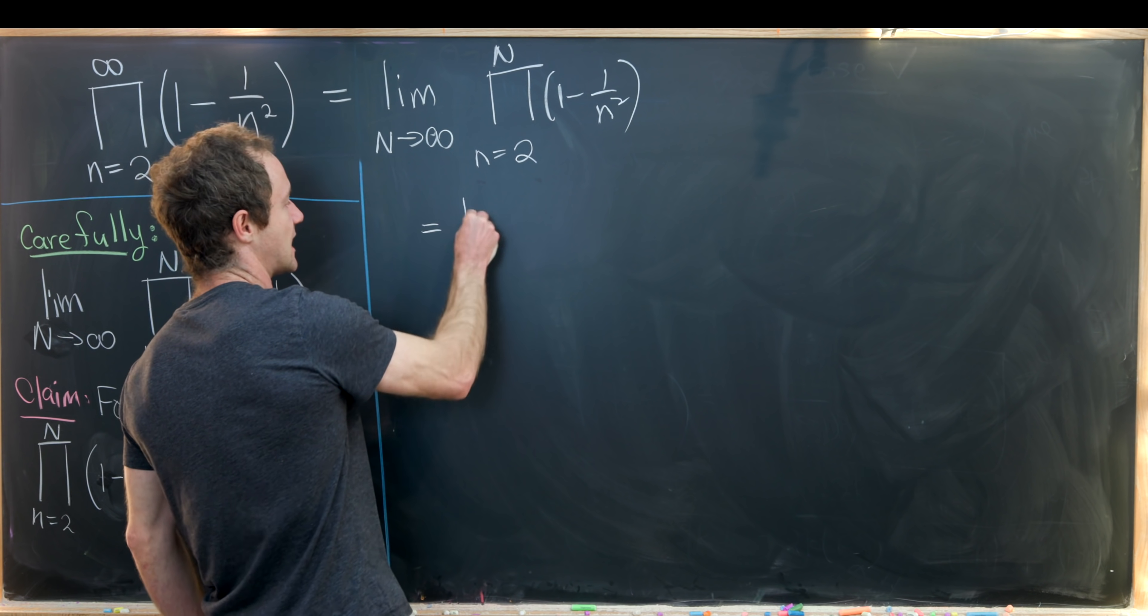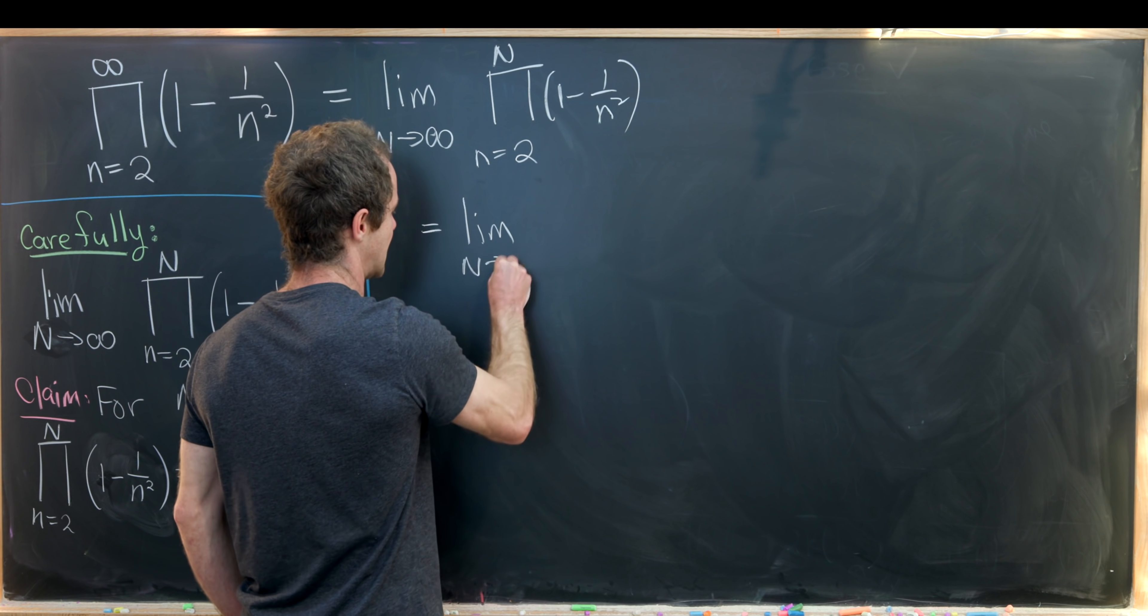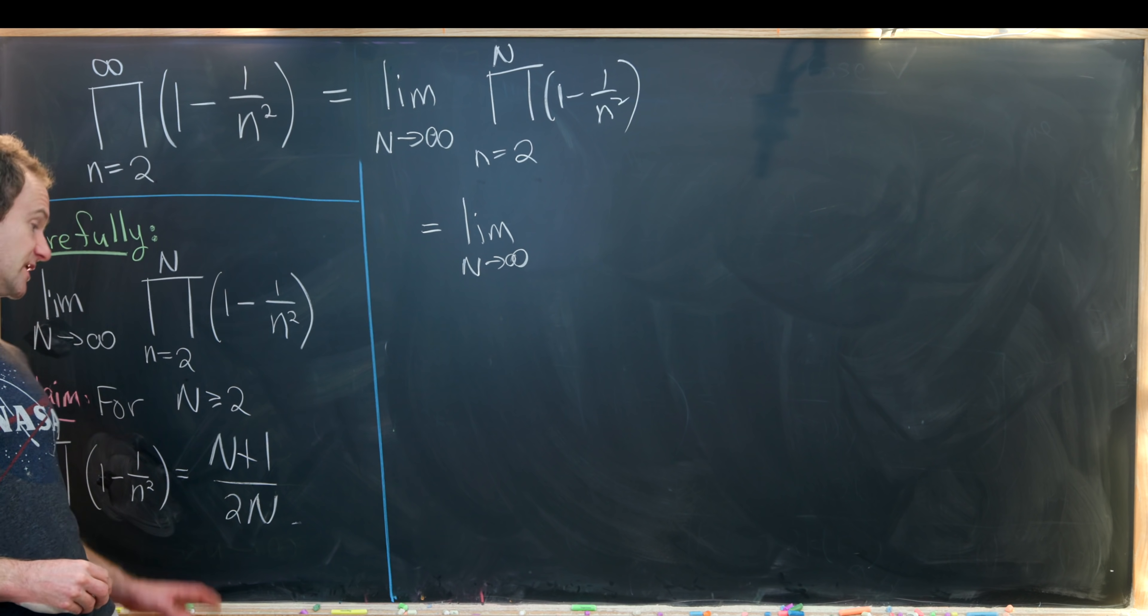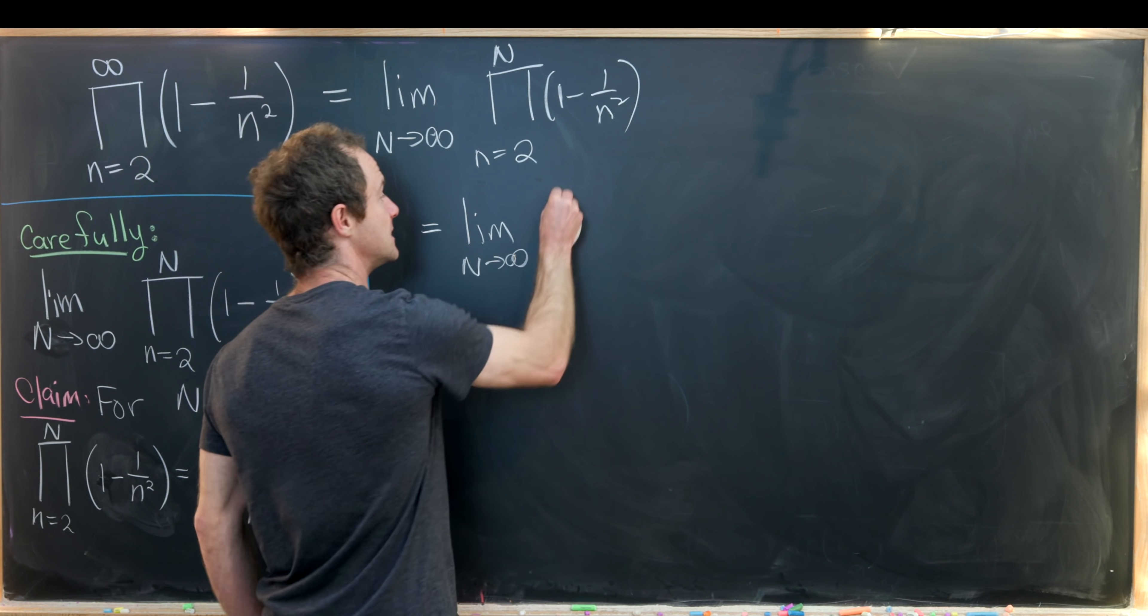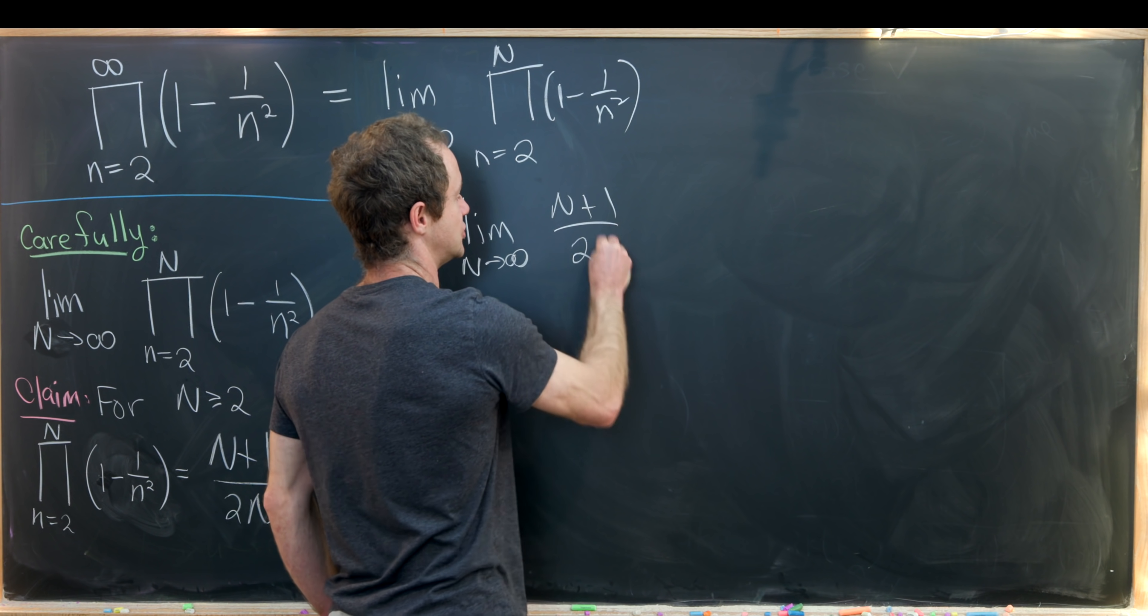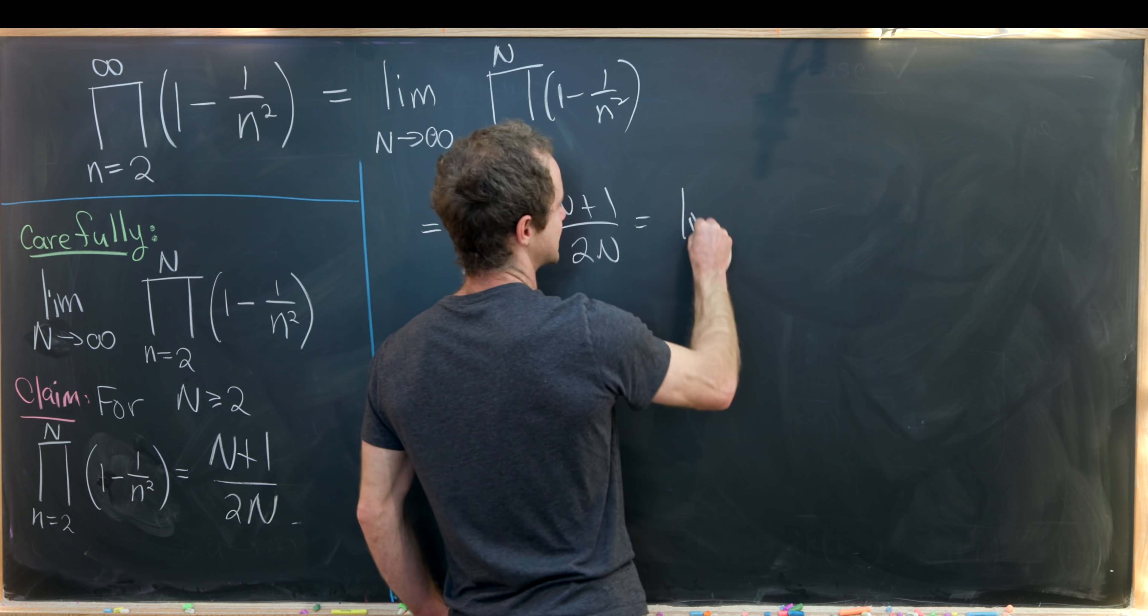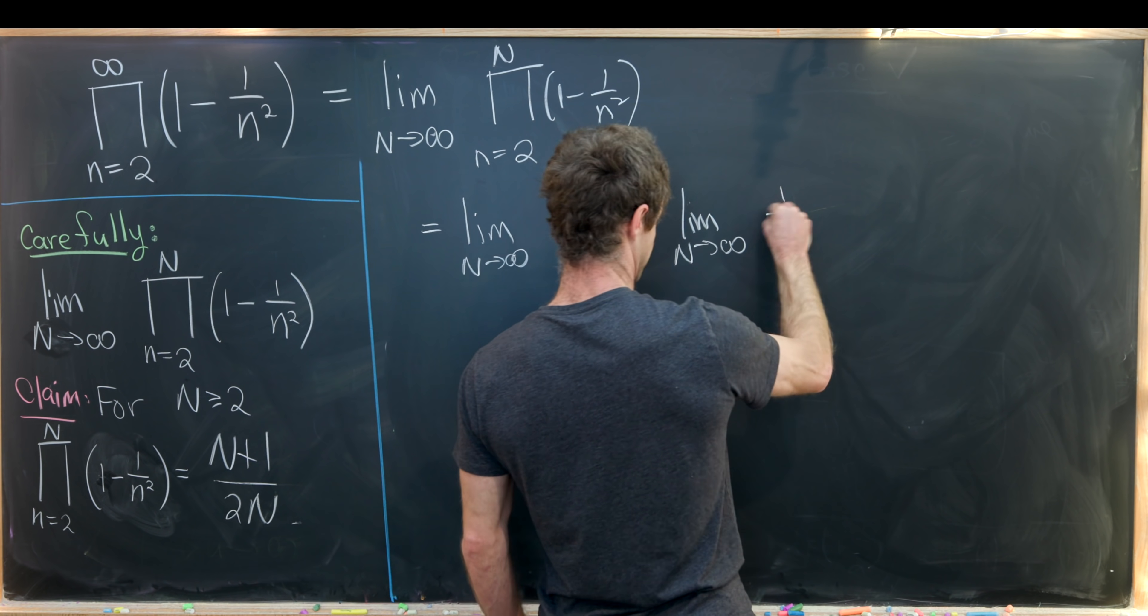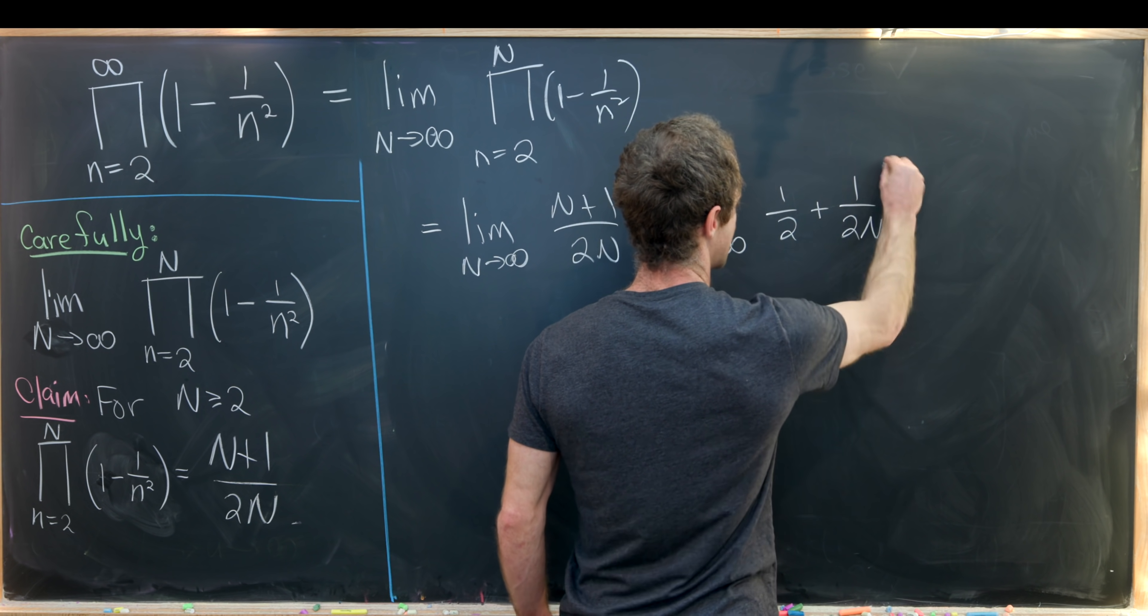Okay, now we can apply this claim that we proved that builds this closed form. And now we have the limit as capital N goes to infinity of N plus 1 over 2N. We can split this up a little bit and we'll have the limit as N goes to infinity of 1 half plus 1 over 2N.